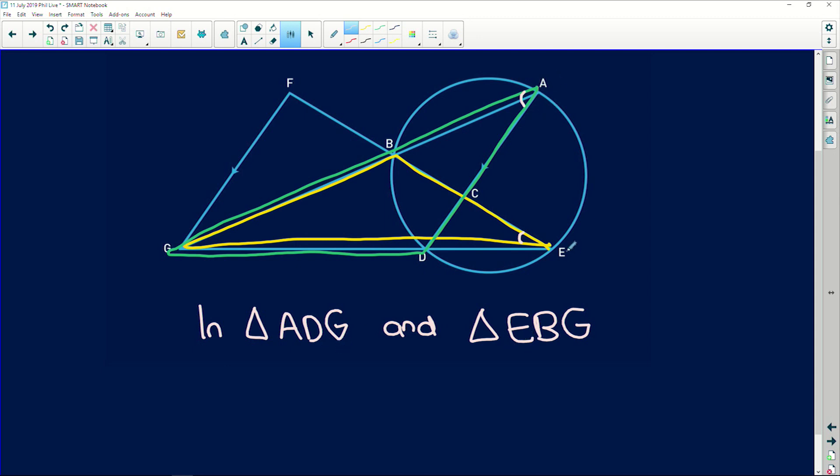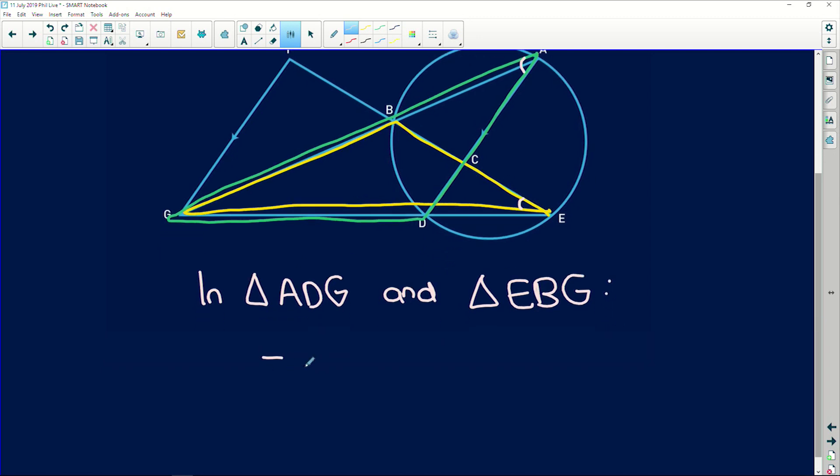We know that angle A is equal to angle E. Angle A is equal to angle E. We can see that G is common. So we write G last, and therefore D is going to be equal to B. We write them corresponding to each other. So angle A is equal to angle E. Why? Angles in the same segment. Because we've got this lovely bow tie shape happening in our cyclic quad.